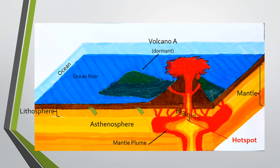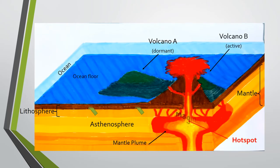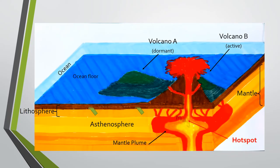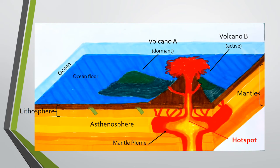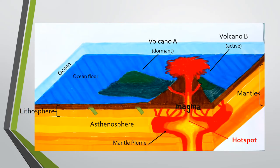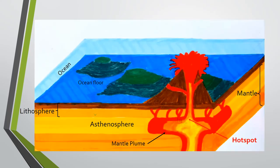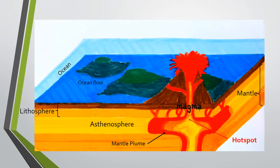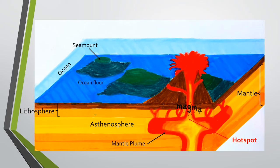The new active volcano will be named Volcano B, formed at the top of the hot spot. Our lifetime is not enough to witness these plate movements. But if we compare the age of the rocks found in these islands, we will notice that the farther the rocks are from the most active volcano, the older these rocks are. After millions of years, there will be a trail of islands and seamounts which evidently have passed through the underlying mantle plume and hot spot.